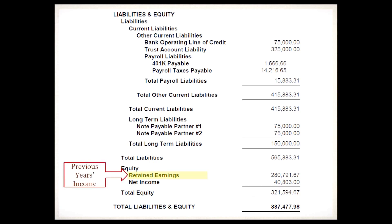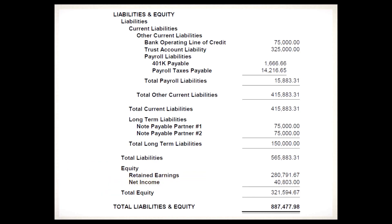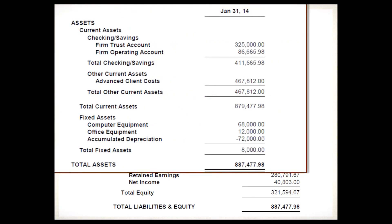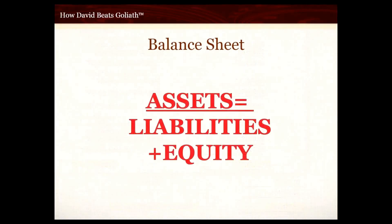Jumping down to equity, we have two entries. First is retained earnings — profits from prior years that have accumulated over time in the law firm. Below that is net income, which is the current year's net income. I'll superimpose the asset section with the total liabilities and equity section once more to show that they balance to the penny, confirming the formula: assets equal liabilities plus equity.